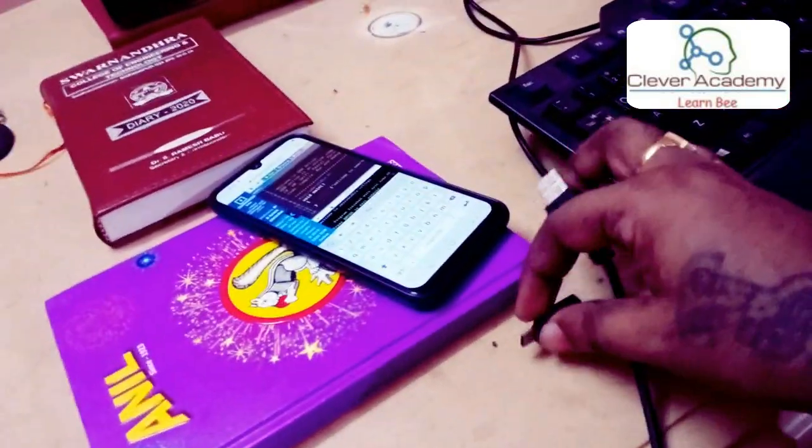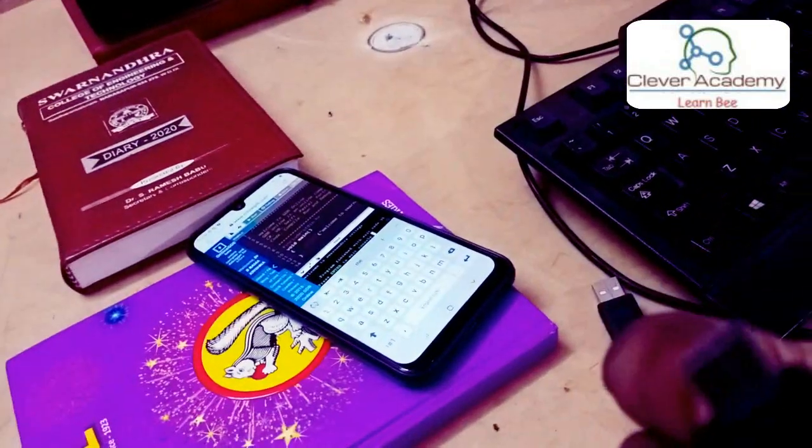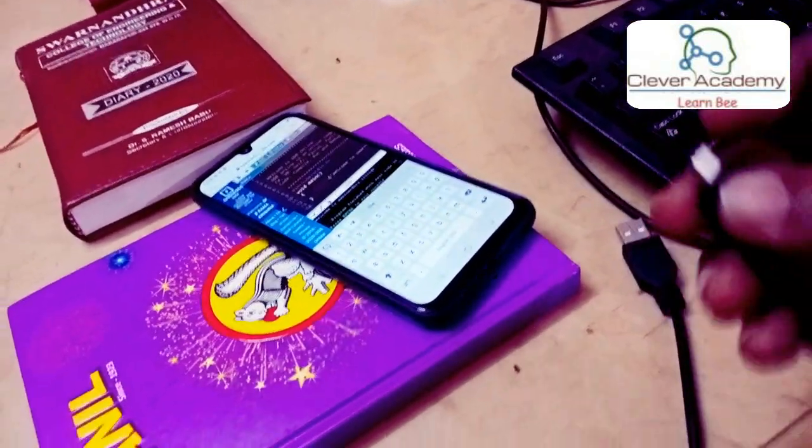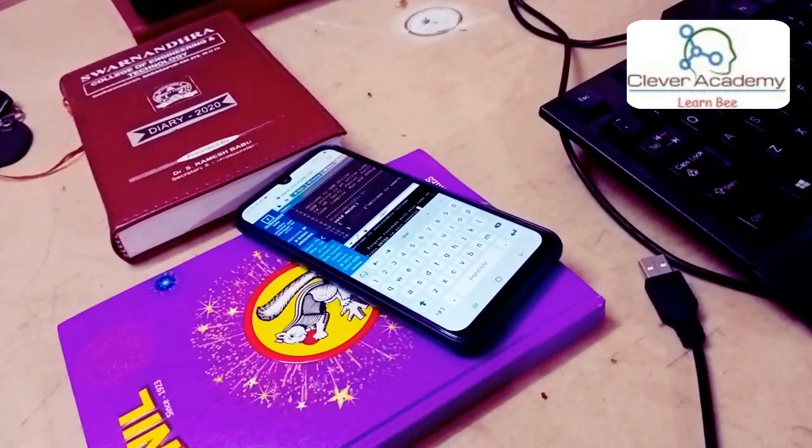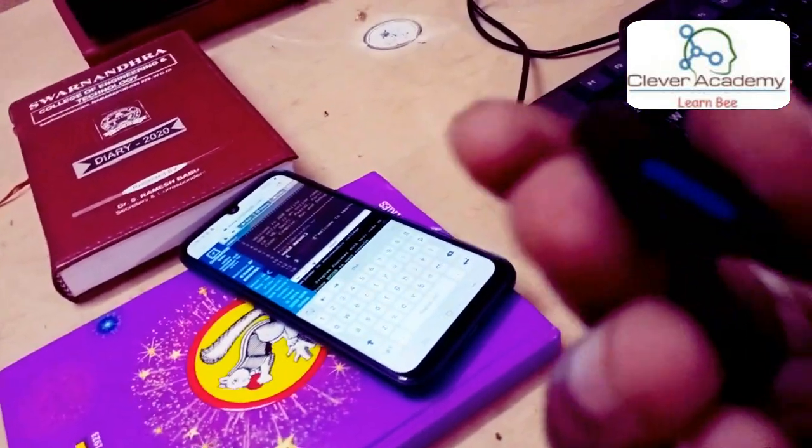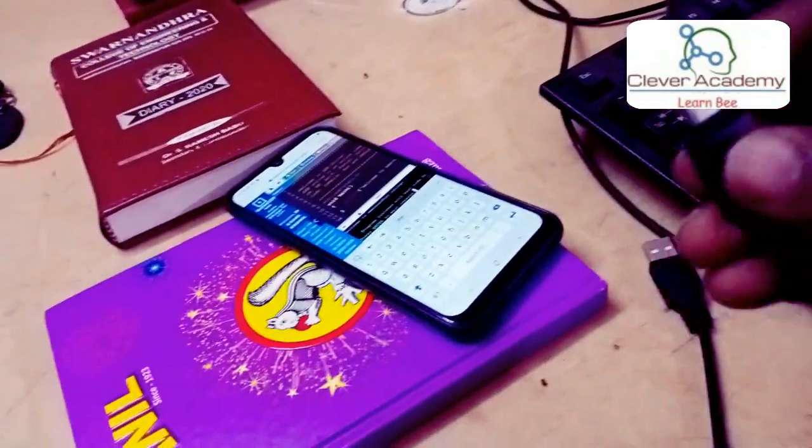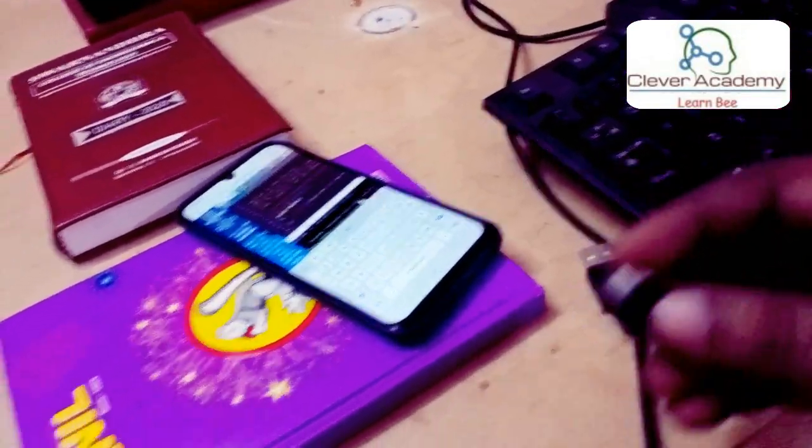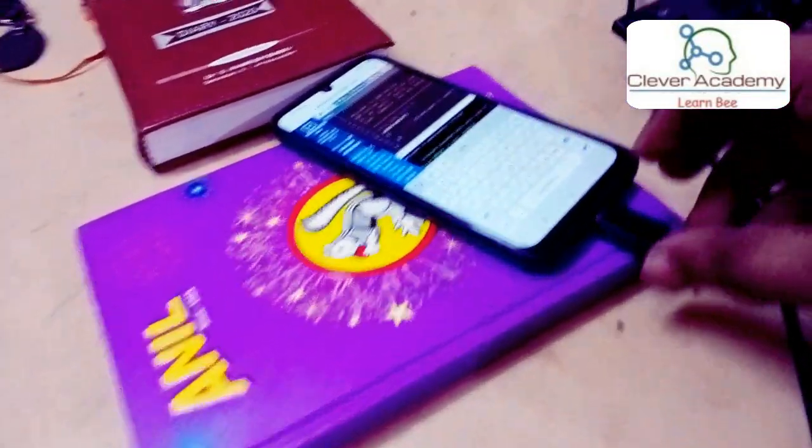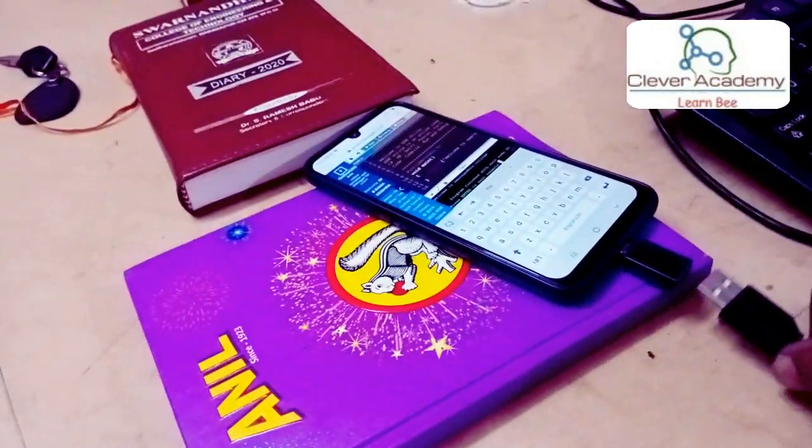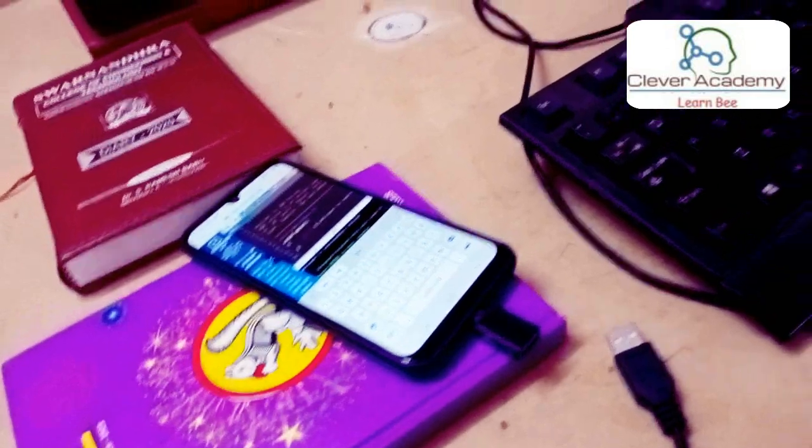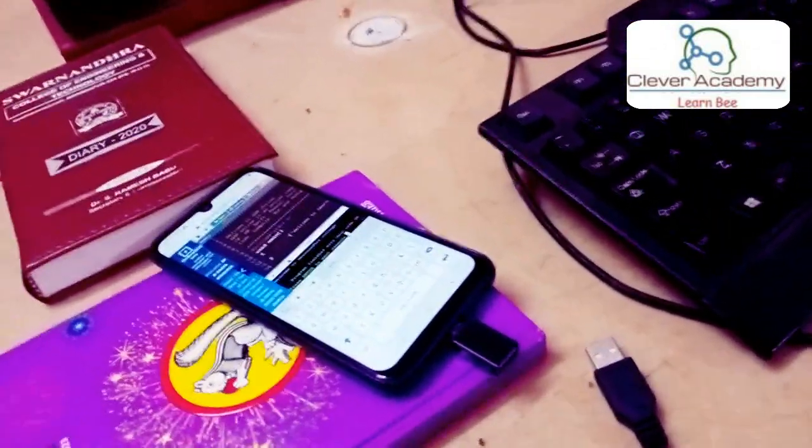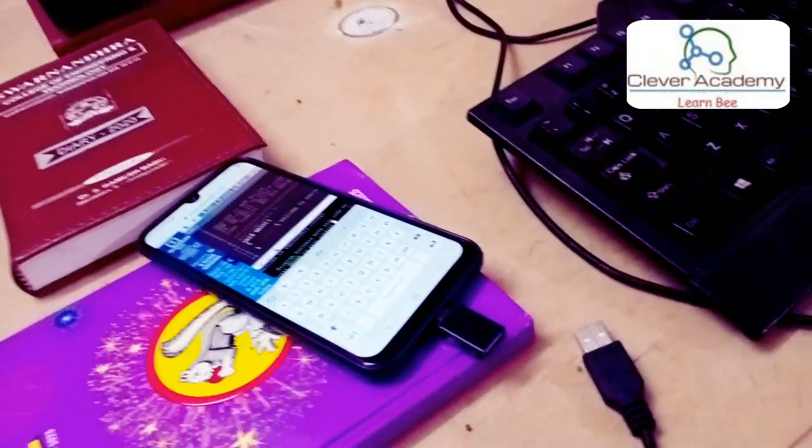OTG connector, this is called OTG connector. It has a mobile charging pin on one side, USB connector on another side. This is called OTG cable. OTG cable connects phone to USB, keyboard, external keyboard. This way you can type and practice a number of programs.